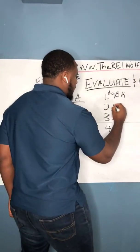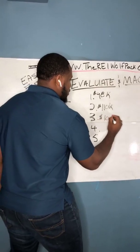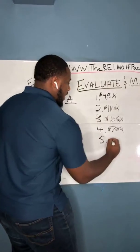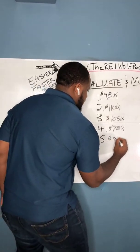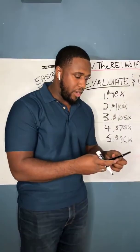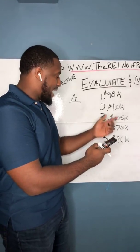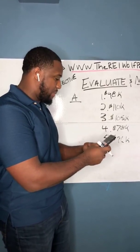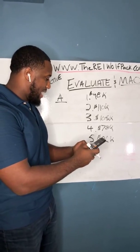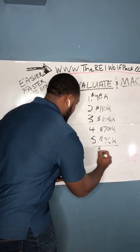I get the average of those five properties. So let's say property number one sold for $98,000, property number two sold for $110,000, property number three sold for $105,000, property number four for $78,000, and property number five sold for $96,000. So I'm going to take out my calculator. We're going to add all this up: $98,000 plus $110,000 plus $105,000 plus $78,000 plus $96,000. That gives me a total of $487,000.